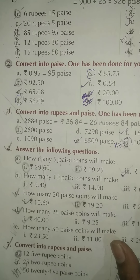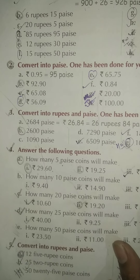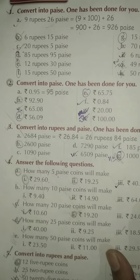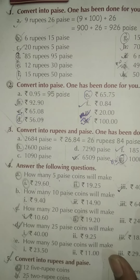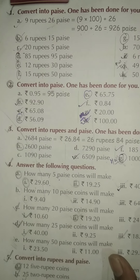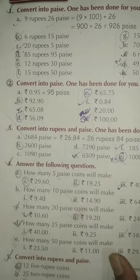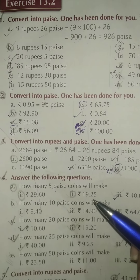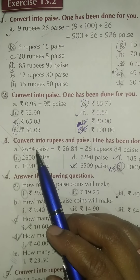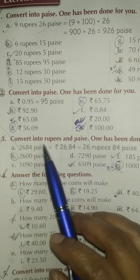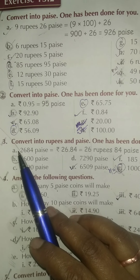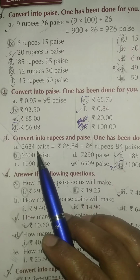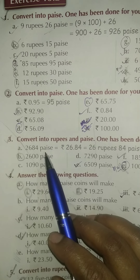Hello everyone, children. Today we are going to start with question number three of Exercise 13.2. In the previous class we learned how to convert rupees into paise. Today we are going to start from Book 7, page number 16, question number three. The question says: convert into rupees and paise, so you have to convert paise into rupees and paise.